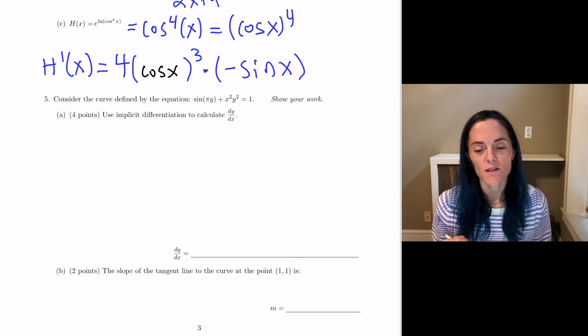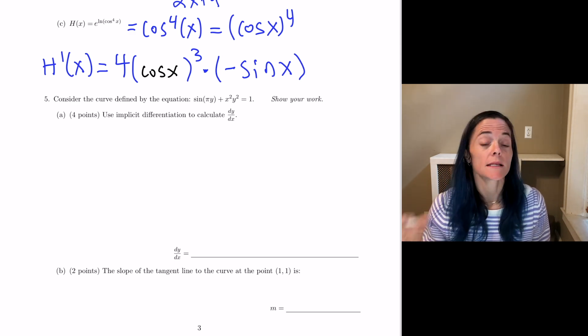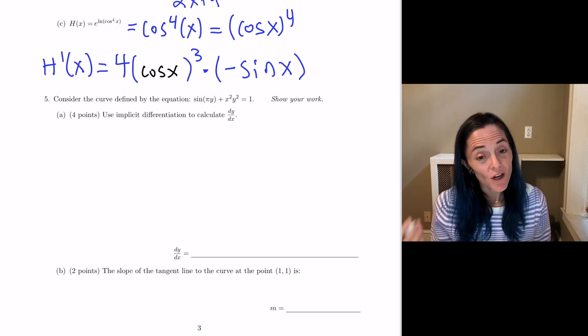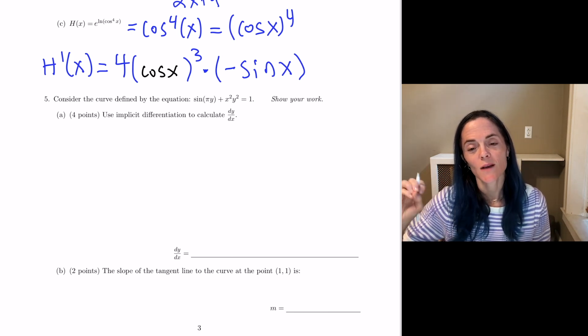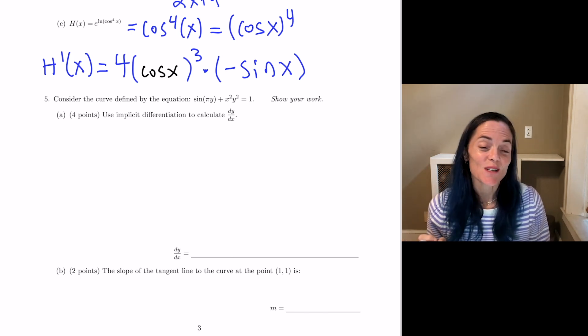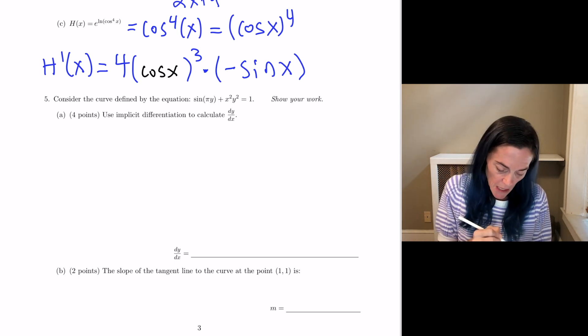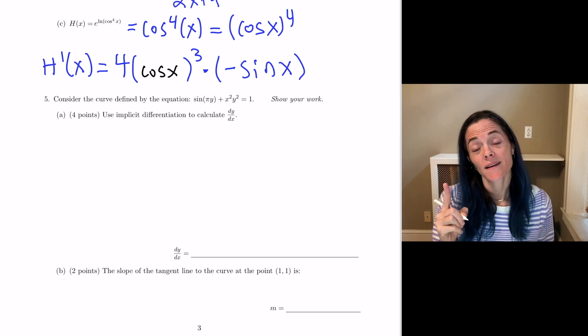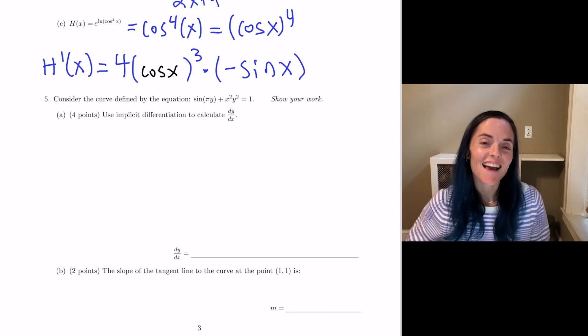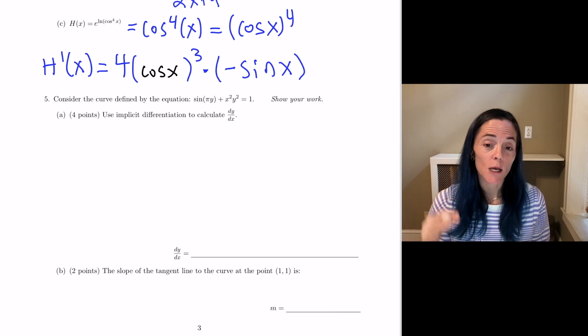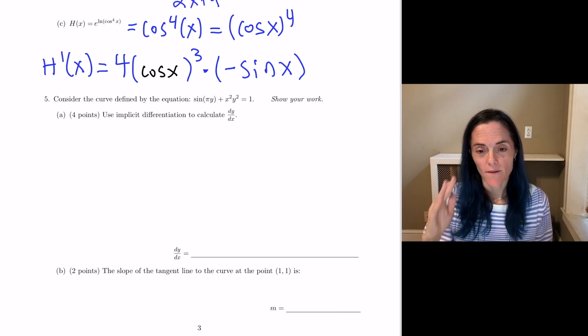Now, number five, this is also quite relevant to quiz four, we have implicit differentiation. So we have a curve defined by sine of pi y plus x squared, y squared equals one. First, we want to find dy dx. Well, okay, first step in calculating dy dx, we differentiate both the left hand side and the right hand side of our equation with respect to x, thinking about y as a function of x.